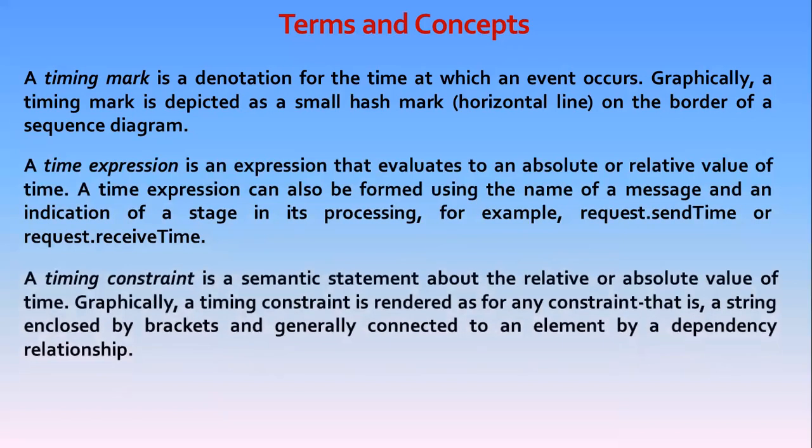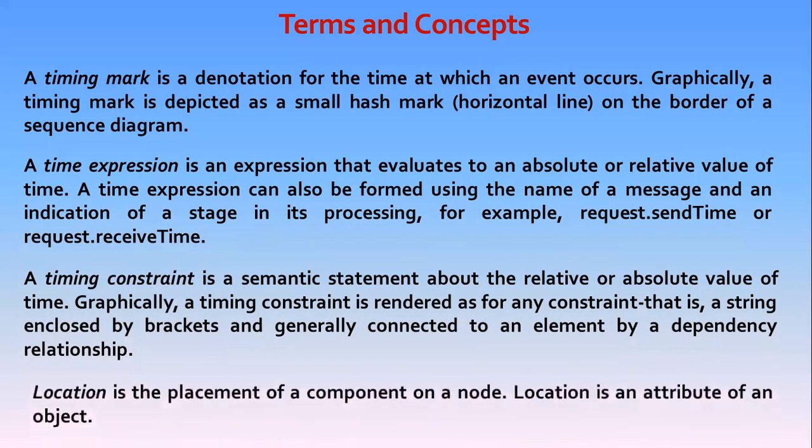A timing constraint is a semantic statement about the relative or absolute value of time. Graphically, a timing constraint is rendered as any constraint: a string enclosed by brackets, generally connected to the elements of a dependency relationship. Location is the placement of components on a node. Location is an attribute of an object.